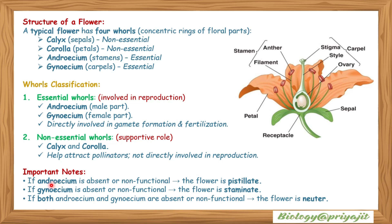Important note: if the androecium is absent or non-functional, the flower is called a pistillate flower because there is only the pistil or female reproductive part. If only the gynoecium is absent, it is a staminate flower. If both androecium and gynoecium are absent or non-functional, the flower is called a neuter flower.